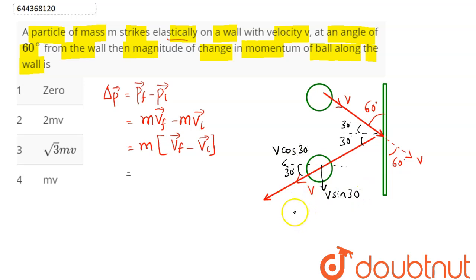So here we can say final velocity vector is given as minus V cos 30 I cap and minus V sin 30 J cap.